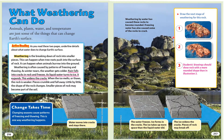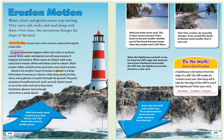Erosion motion. Water, wind, and glaciers never stop moving. They carry soil, rocks, and sand along with them. Over time, this movement changes the shape of the land. Active reading: as you read, circle a word or phrase that signals a main idea. In general, erosion happens when soil, rocks, or sand are moved. Wind, water, and glaciers can all cause erosion.